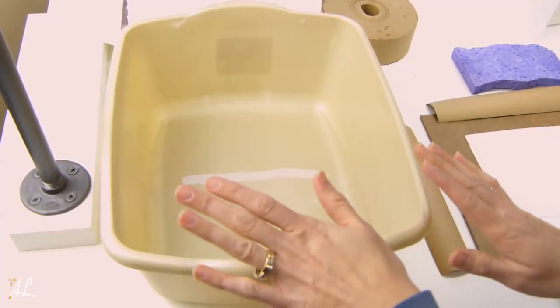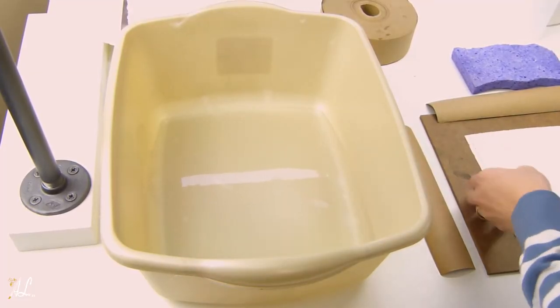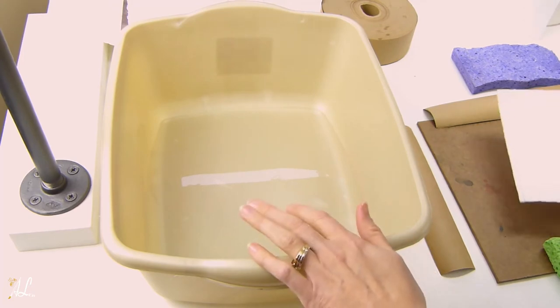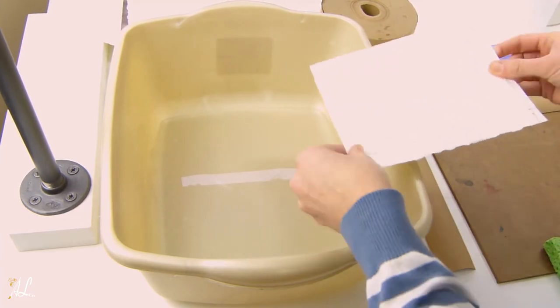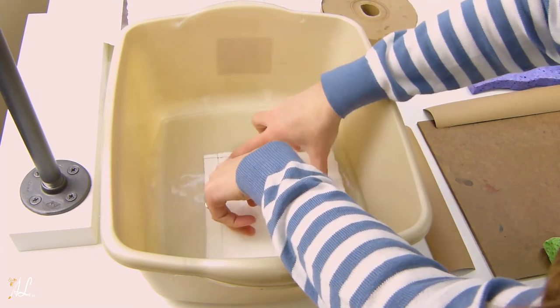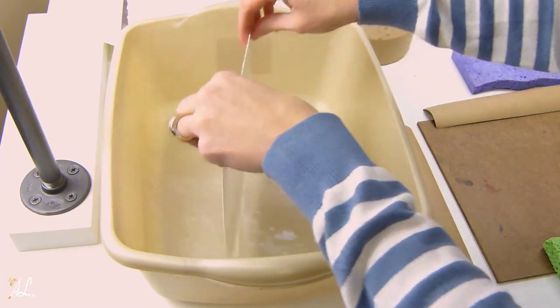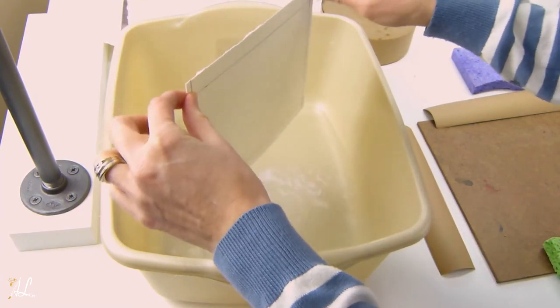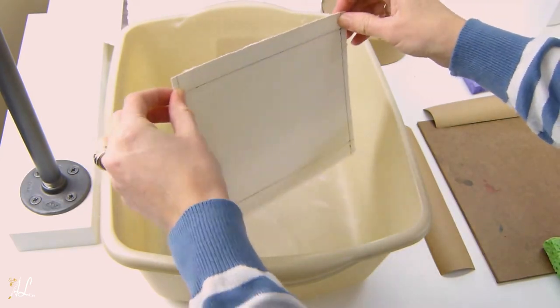Now we're going to take our paper and submerge it in our water, making sure that it is completely covered. You're not going to leave it in there for very long, just glide it through, make sure everything is wet. Then I let it drip a little bit to get off any excess water.